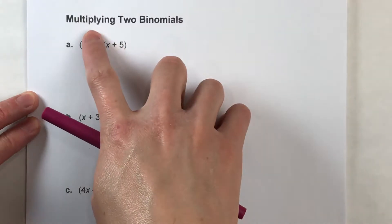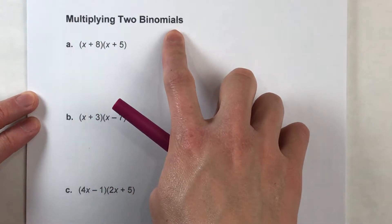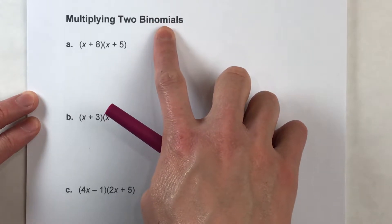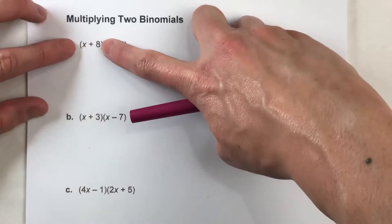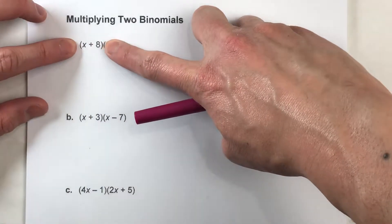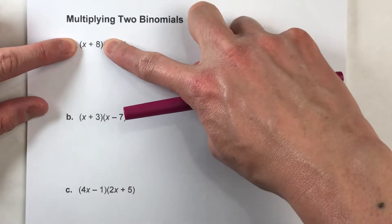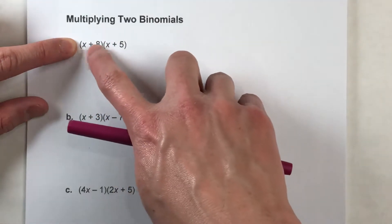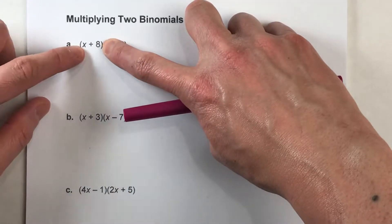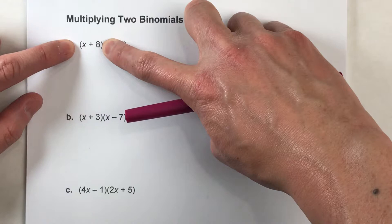So today we are multiplying two binomials. A binomial is an algebraic expression that has two terms. For example, x plus 8 is a binomial because there are two terms — two things being added together. We've got an x and an 8, so that makes it a binomial.